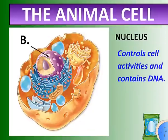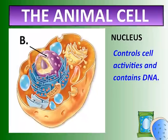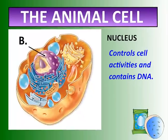Then we have the nucleus. Think of this like the brain of the cell — it controls all the cell activities. Within the nucleus, we have our DNA, the thing that determines what this cell is, what it's supposed to do, and what it's made out of. That's all in the nucleus.